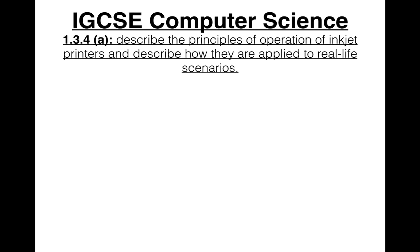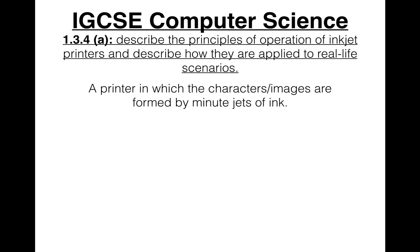Moving on to output devices — this really isn't going to be any different from what we did with input devices, except these devices output. Each video covers one output device. An inkjet printer is a printer in which characters or images are formed by minute jets of ink — that's the dictionary definition.